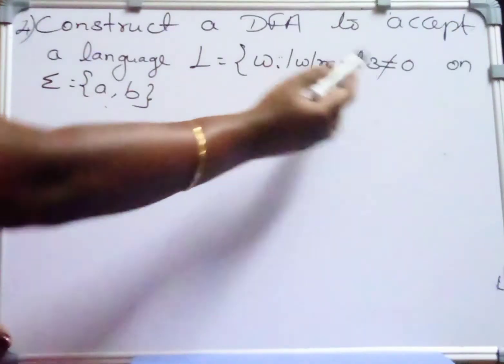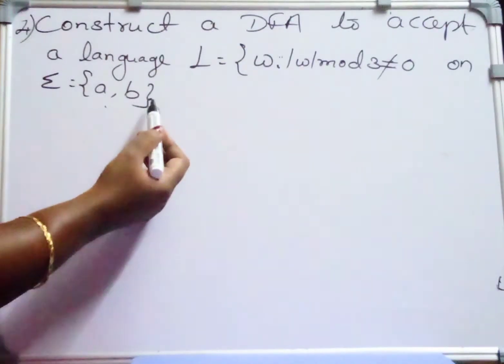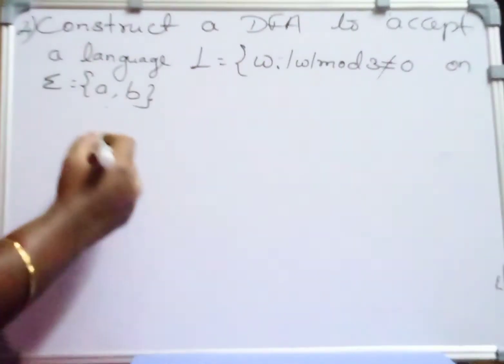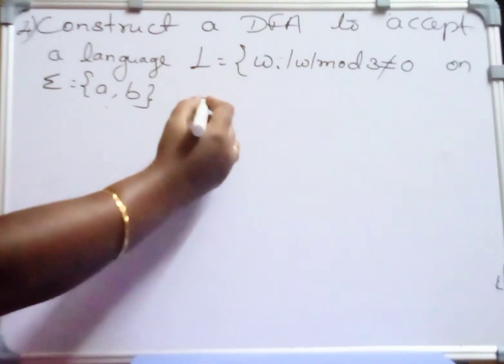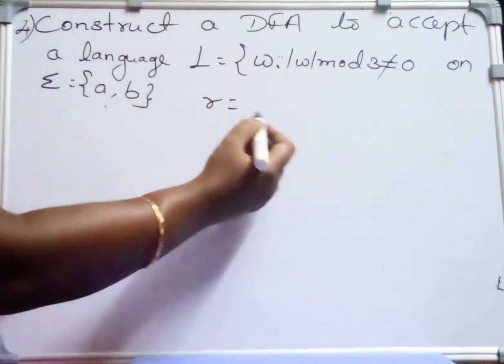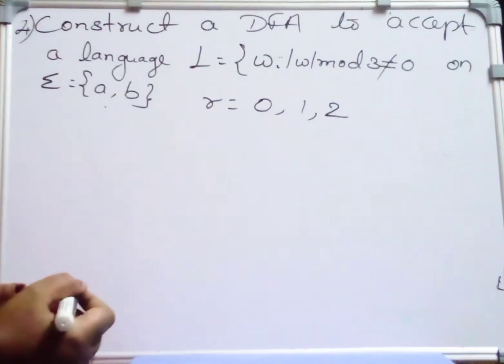Since it is a modulo problem, it gives the information that the automata is having three different states. So on reading any input A or B, we design this DFA starting from Q0. What are the possible remainders for mod 3? That is 0, 1, and 2, the possible remainders.